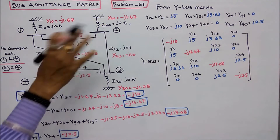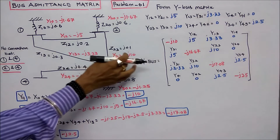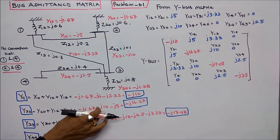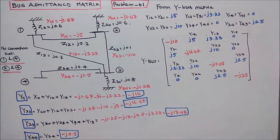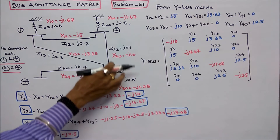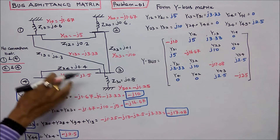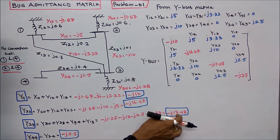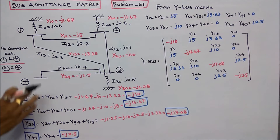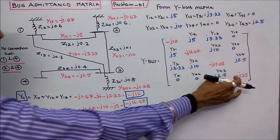Y22 equals Y20 + Y12 + Y23 = −j1.67 − j5 − j10 = −j16.67. Y33 has four elements connected: Y30 + Y23 + Y34 + Y13 = −j17.08. Y44 has only one element connected, so Y44 = −j2.5.